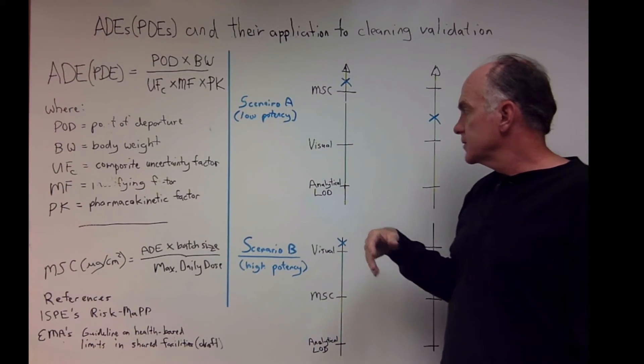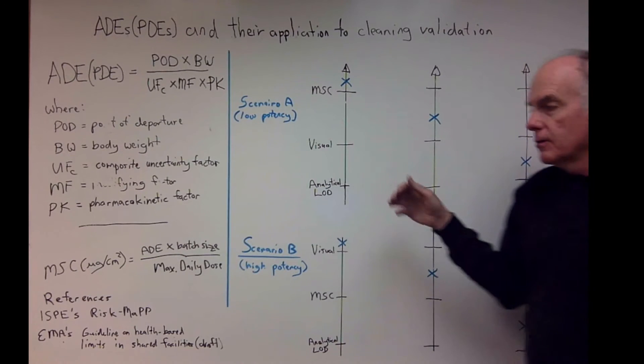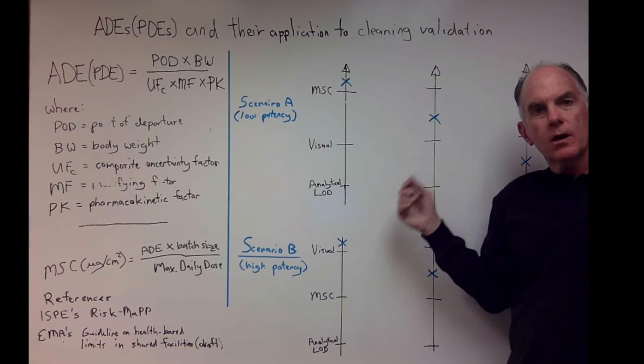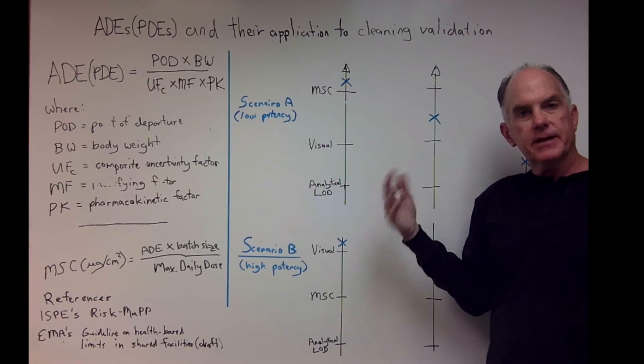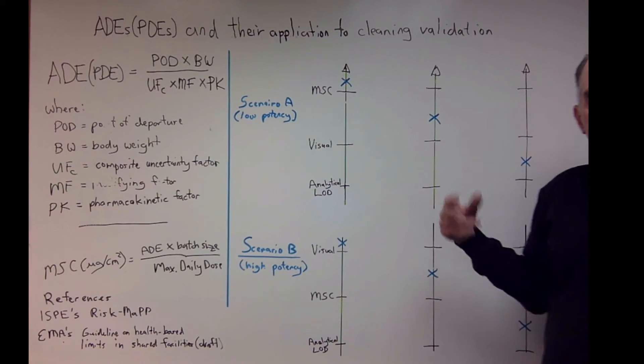In all of these scenarios we're also assuming that your analytical method, your limit of detection of your analytical method, is robust enough where it's below the visual limit.